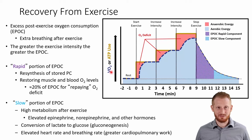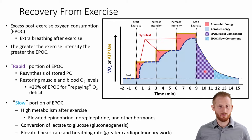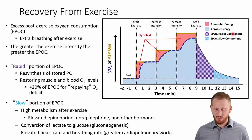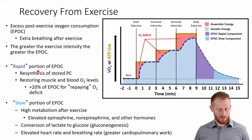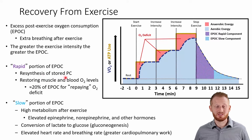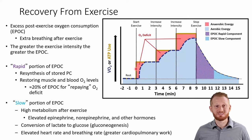Looking at this diagram more closely, we have two different shaded areas of EPOC: the purple checkered area is the rapid component, and the blue hashed area is the slow component. Each one is created by different factors causing the extra oxygen consumption. Let's talk about the rapid component first. One of the main things we're doing during the rapid component is re-synthesizing our phosphocreatine stores, because during the anaerobic periods developing the oxygen deficit, we used a lot of phosphocreatine to fuel exercise.